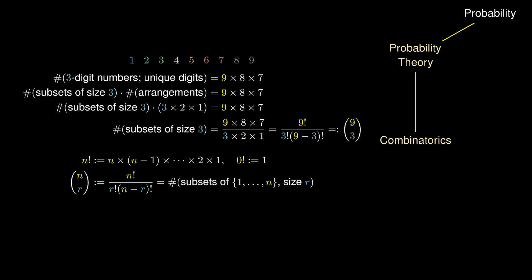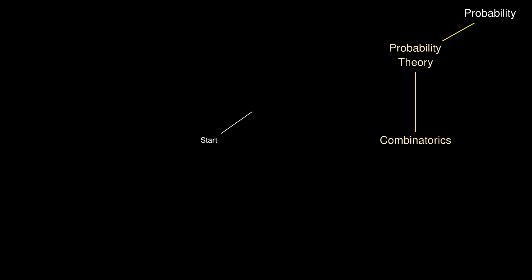While there are many other tricks and techniques in counting, once we can do counting, we can define the probability of an event as the number of outcomes in the event divided by the total number of outcomes. But many a time, we are interested in probabilities that happen one step after another.